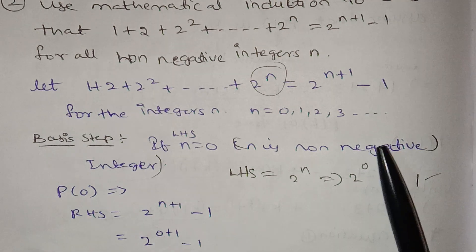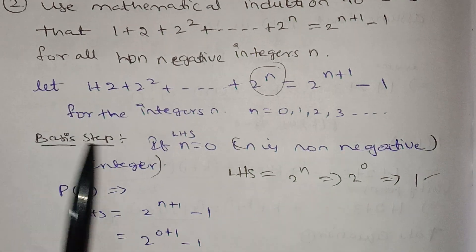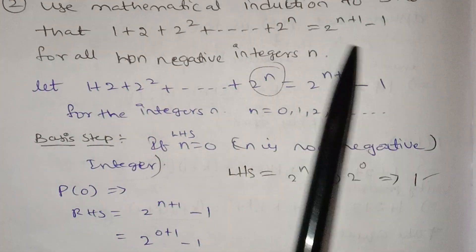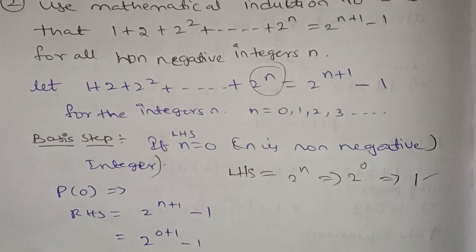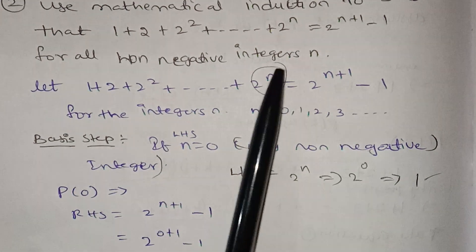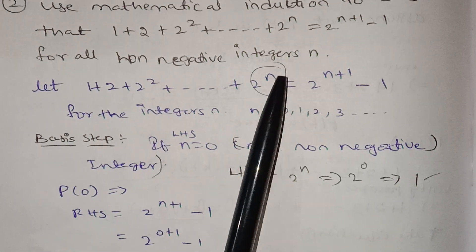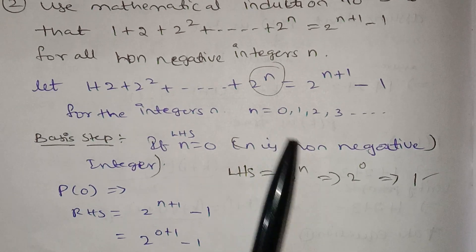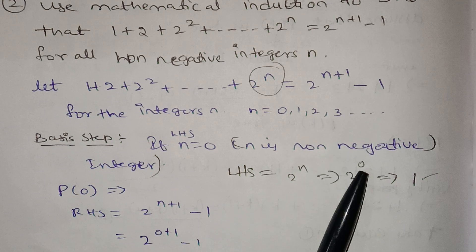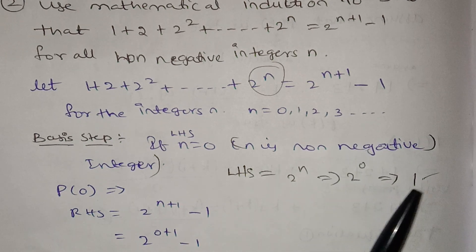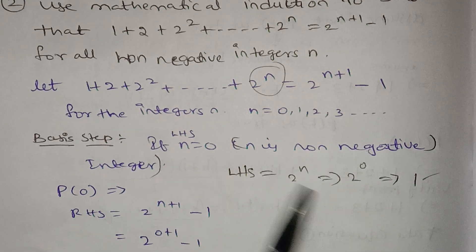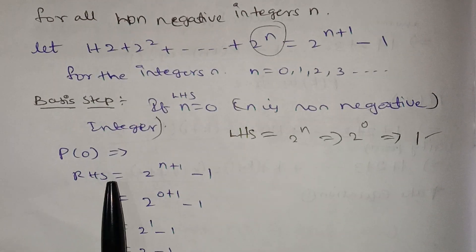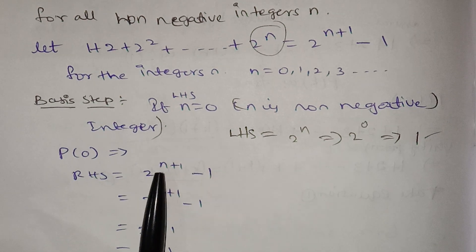Basic step: assume n = 0. LHS: 2⁰ = 1. When n = 0, LHS equals 1. Next, RHS: 2^(n+1) − 1. When n = 0, RHS = 2^(0+1) − 1.